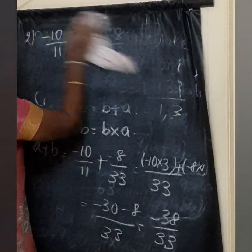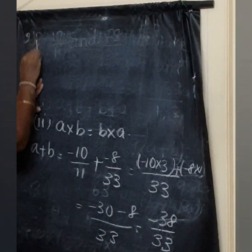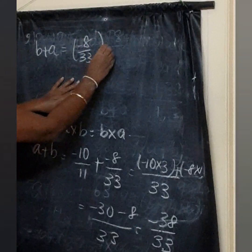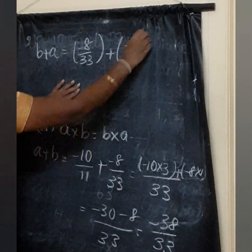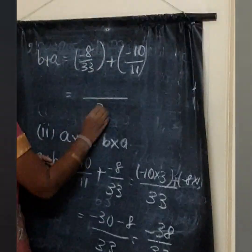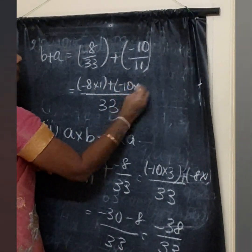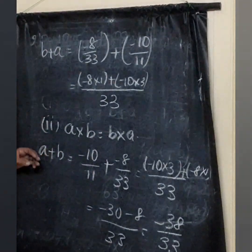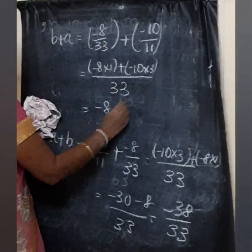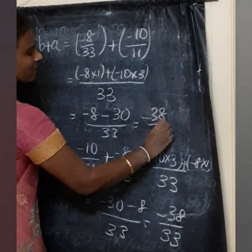Now find B plus A: minus 8 by 33 plus minus 10 by 11. The LCM is again 33. We get minus 8 into 1 plus minus 10 into 3 over 33, which is minus 8 minus 30 equals minus 38 by 33.